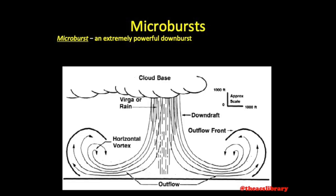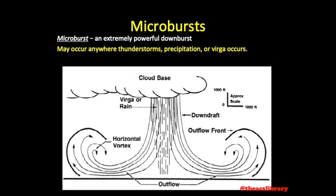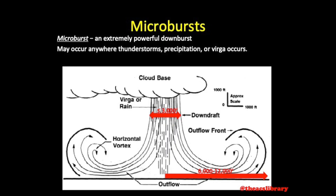Microbursts — those extremely powerful downdrafts mentioned earlier — may occur anywhere that thunderstorms, rain showers, or virga (precipitation that evaporates before reaching the ground) occur. Rarely, microbursts may occur absent precipitation. A microburst itself is only a couple hundred to 3,000 feet wide. When it reaches the ground, horizontal vortices spread out an additional 6,000 to 12,000 feet and may reach heights of 2,000 feet. The typical lifespan of a microburst is between 10 to 20 minutes after ground contact.